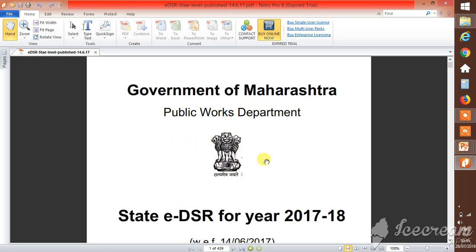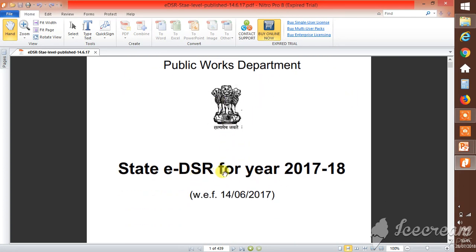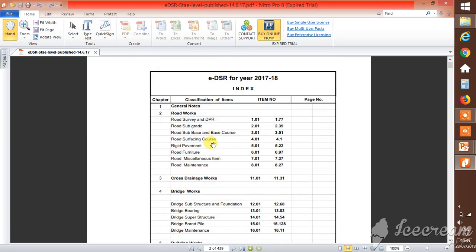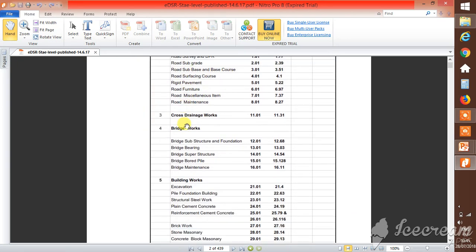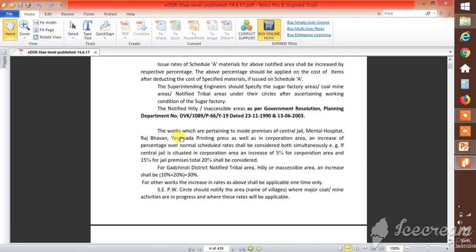It was being published before one year region-wise, but since last two years, from 2017-18, the Government of Maharashtra is publishing the e-DSR for complete state of Maharashtra. In this, different kinds of works and their specifications, the quality of work required, their rates - all these things are being mentioned.